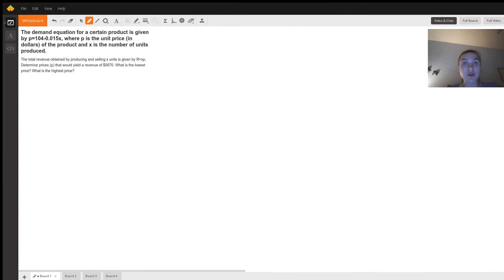Okay, so in this problem, we're given a demand equation, which includes a price and the number of units, and we're also given the equation for the total revenue, which is a function of the demand equation in terms of price and units, as well as the units.